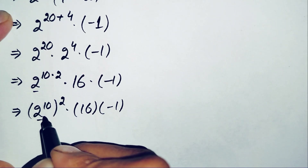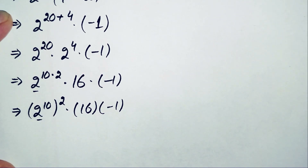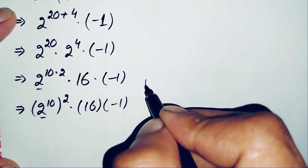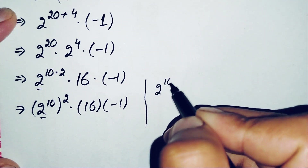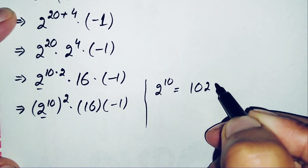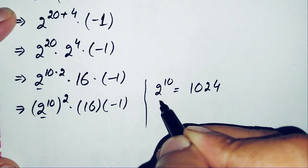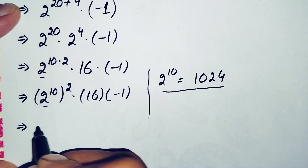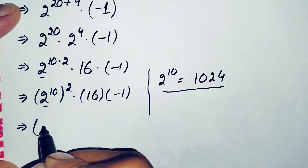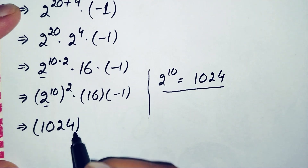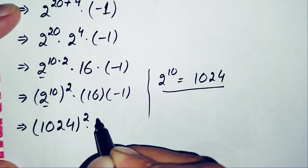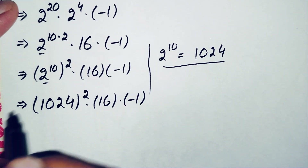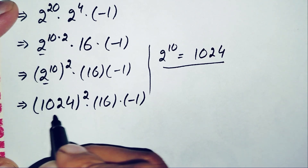We now replace 2 raised to power 10 with its value. 2 raised to power 10 is the well-known number 1024. Substituting this, the expression becomes 1024 whole square times 16 times negative 1.